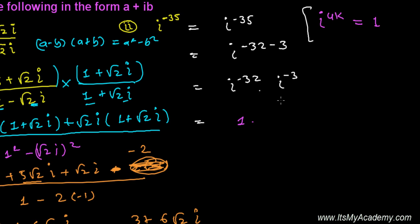Now i^(-3), you can bring to the denominator as i³. Let me tell you, i³ is definitely -i because it's i² times i, so i² is -1 and then times i, so it will be -i.